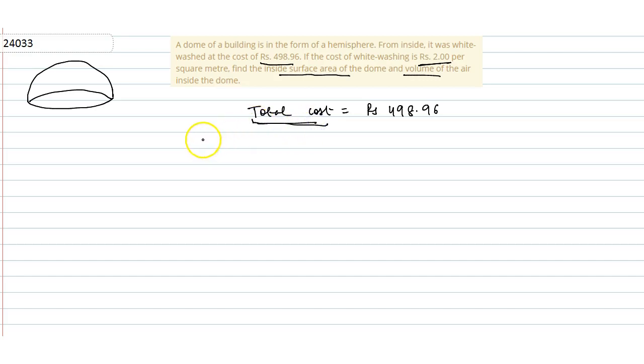Total cost is equal to cost per meter square into the area, the surface area of the hemisphere part. This is equal to 498.96. 1 meter square cost is how much? Rupees 2. Area is how much? Which is equal to 2πr².